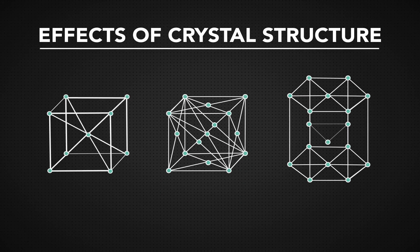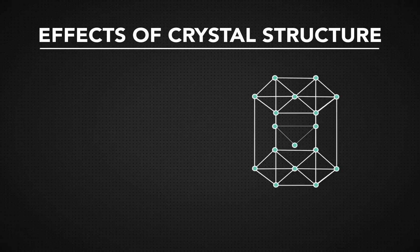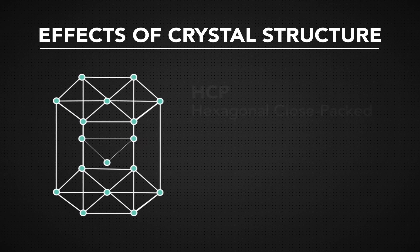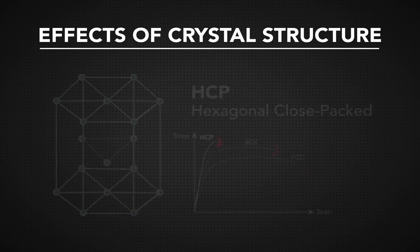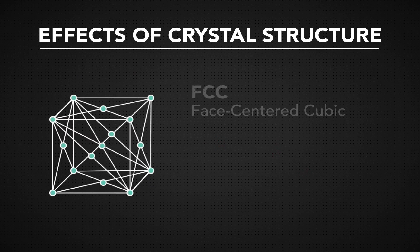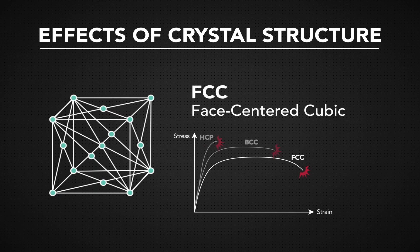A metal's crystal structure determines its characteristics. HCP structures tend to be very brittle because of the way that they are packed together. FCC metals usually are ductile — they slide around easier than HCP structures.